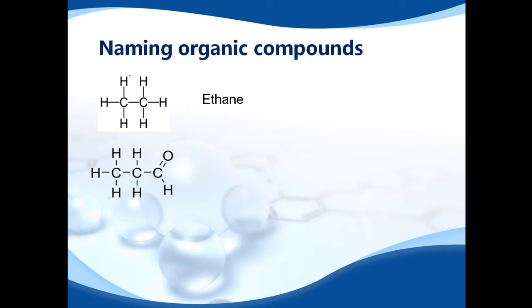The next one, the functional group is this part on the end. We have a carbon with a double bond to an oxygen and another hydrogen. So it's an aldehyde. And there's three carbons. So it's meth, eth, prop. It becomes propanal.